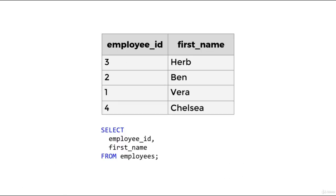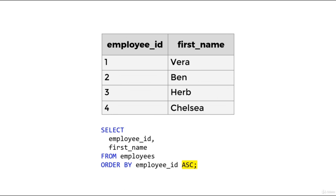However, SQL does provide us with a way of ordering rows in a query result using the ORDER BY clause. At the end of our statement we can add ORDER BY — now the rows are guaranteed to be ordered by the employee_id attribute. Note that this result is not quite considered relational; in standard SQL, this is what's called a cursor. A couple of things to note about ORDER BY: it always comes at the end of the SELECT statement, and the default order is ascending order.